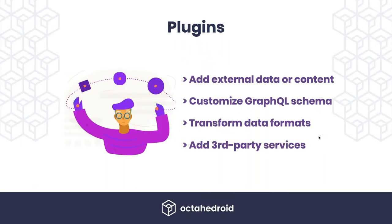Gatsby provides out-of-the-box functionality that is easy to extend using plugins. Plugins allow you to add external data or content, customize the GraphQL schema, and transform data. For example, you might receive Markdown and turn it into HTML, or receive a remote image and turn it into a local image that Gatsby can manipulate. Anything that is a third-party service has a plugin in the Gatsby ecosystem to integrate into your page.